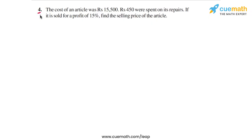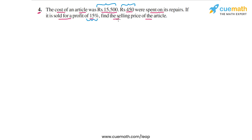In question 4 of this exercise, the problem statement is as follows: the cost of an article was rupees 15,500. Rupees 450 were spent on its repairs. If it is sold for a profit of 15%, find the selling price of the article.